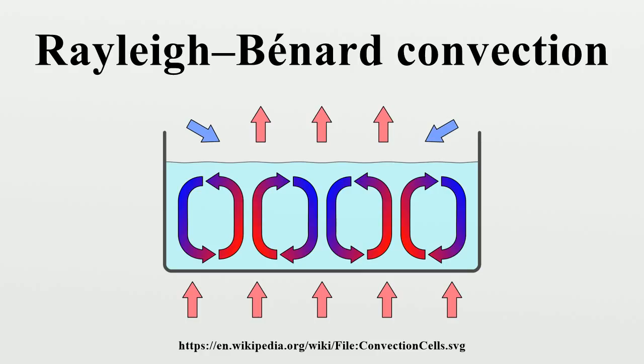If the temperature of the bottom plane were to be further increased, the structure would become more complex in space and time, and the turbulent flow would become chaotic.